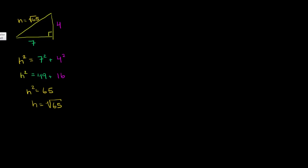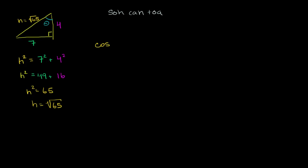Now let's find the trig functions for this angle up here — let's call that angle theta. Whenever you do it, I find it works to write down SOH CAH TOA. It's a very useful mnemonic. So let's say we wanted to find the cosine of our angle. The CAH part tells us that cosine is adjacent over hypotenuse.